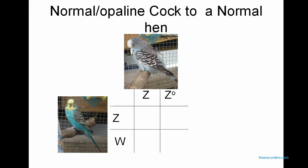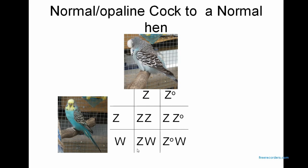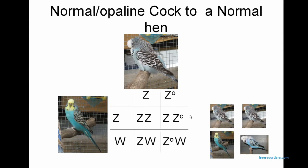Now breeding a normal cock split to Opaline to a normal hen: the split cock gives half his babies a normal chromosome and half an Opaline chromosome; the hen gives half a normal Z and half a W. The results: 50% of cock babies will be normal, 50% will be split for Opaline but appear normal. 50% of hens will be normal, and 50% of hens will be Opaline.